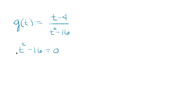We can factor this as the difference of two squares, or simply move 16 to the right side to get t squared equals 16. Taking the square root of both sides, we get t equals plus or minus 4. These are our possible solutions.